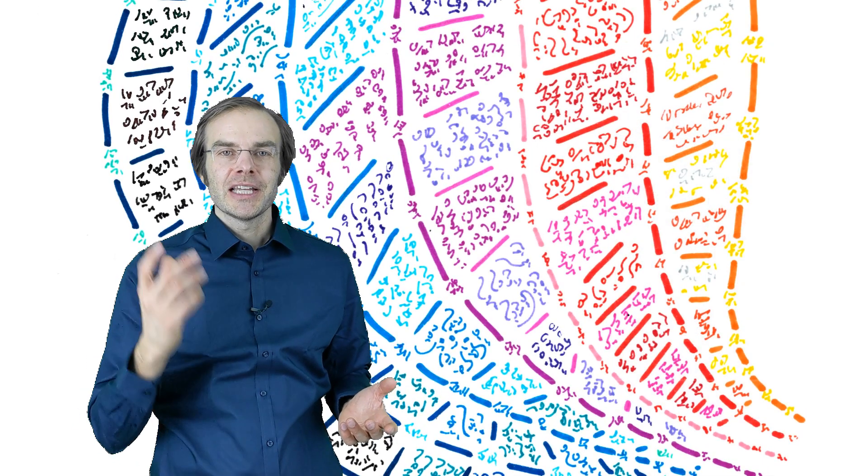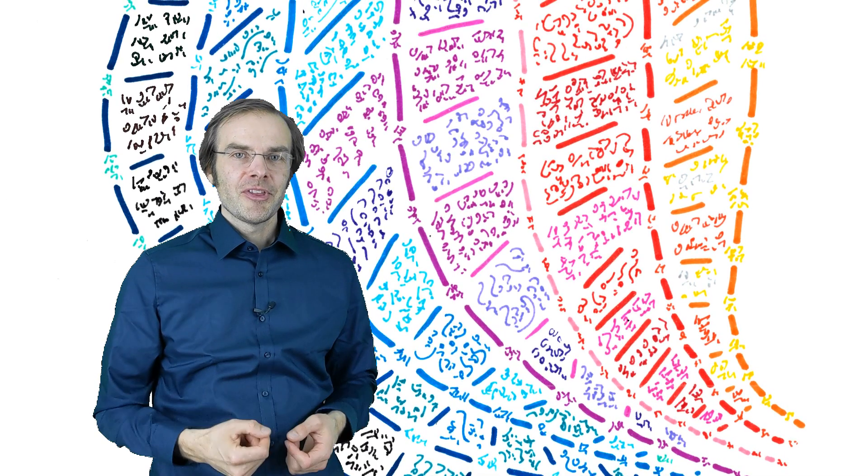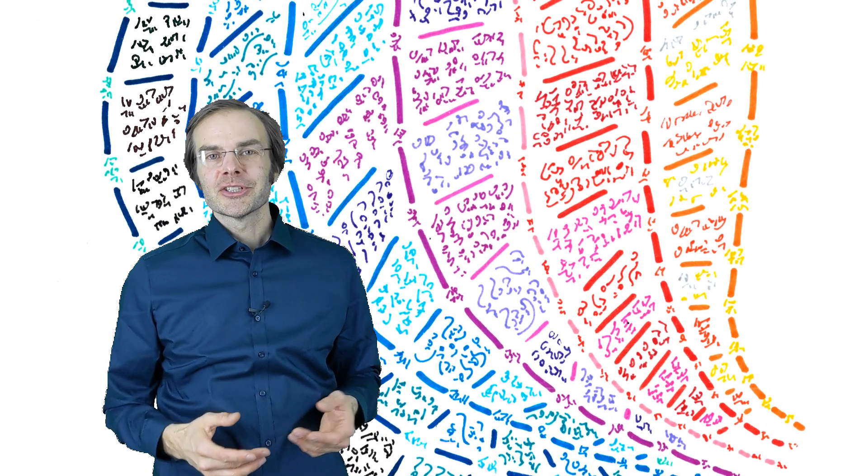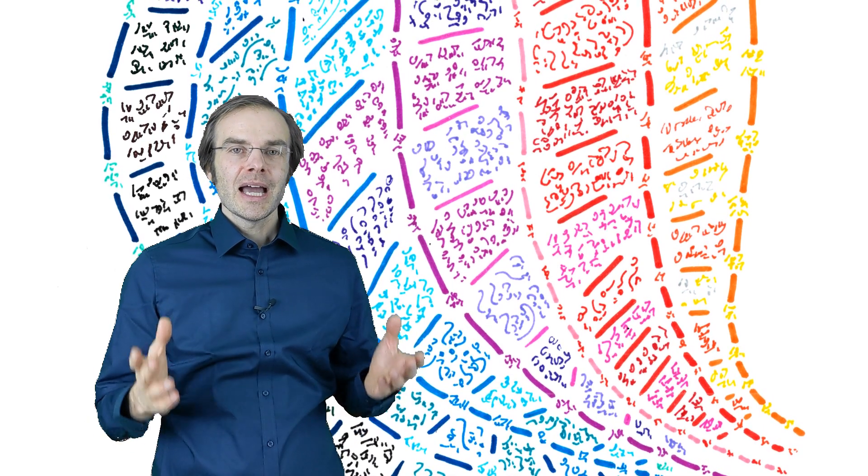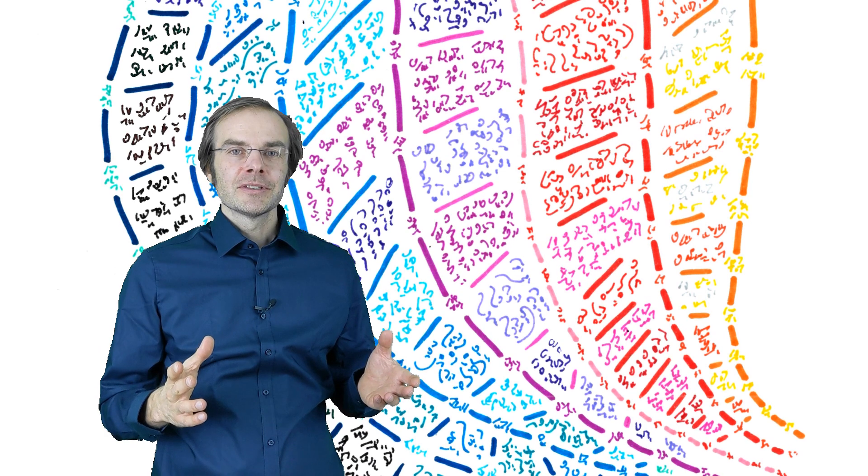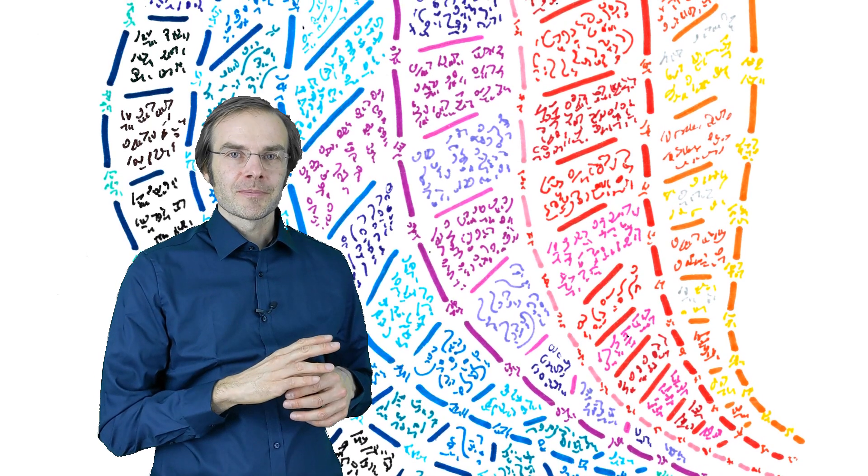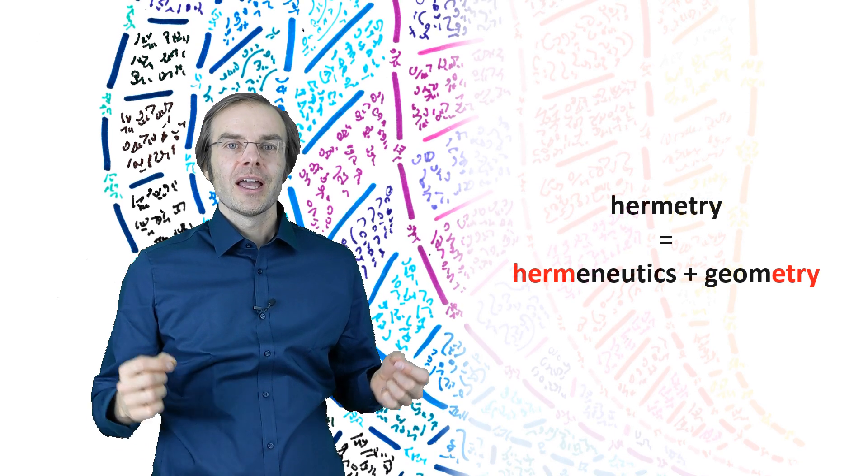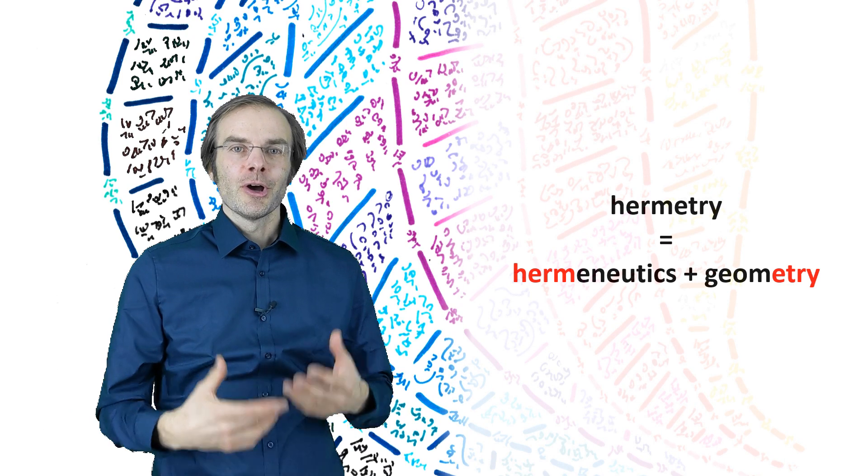I'm, of course, now only telling you the results. At this stage of the introduction of Heim theory, I can only ask you for your patience until I have treated the details in future videos. By the way, Heim called these different cases of geometrical deformations hermetry, which is a contraction of the words hermeneutics and geometry, meaning an interpretation of geometry.